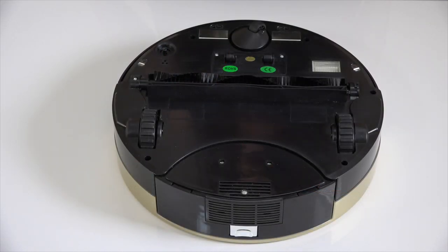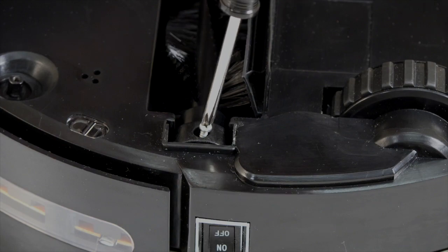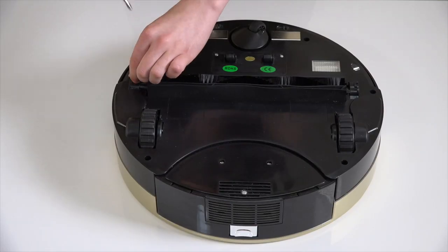To start taking Bob apart, flip your vacuum over and remove the seven screws that hold the cover together. You will need to remove the main brush to access two of the screws.